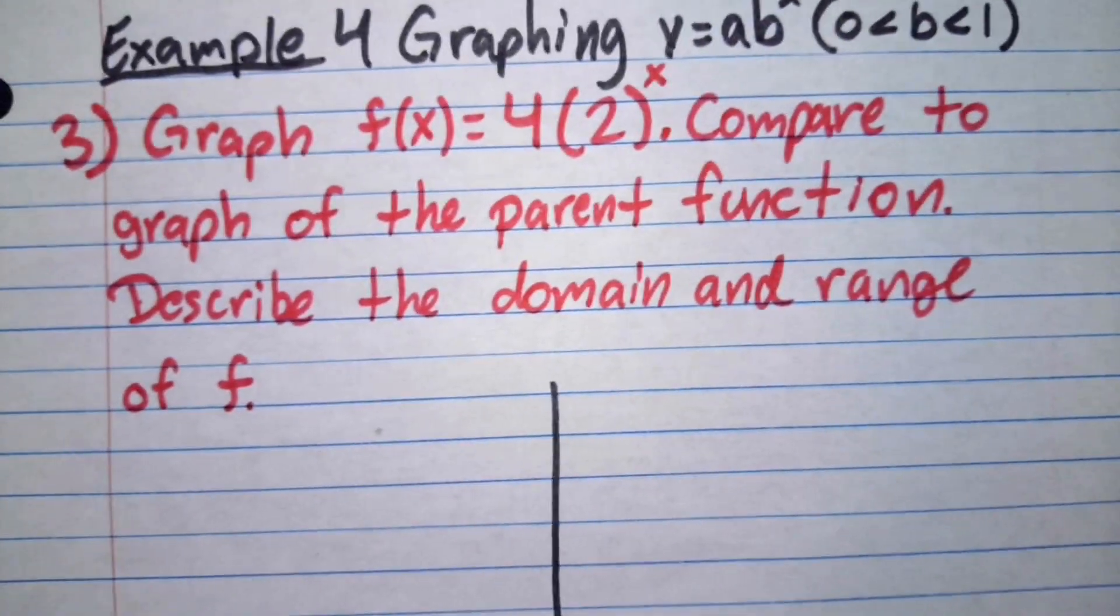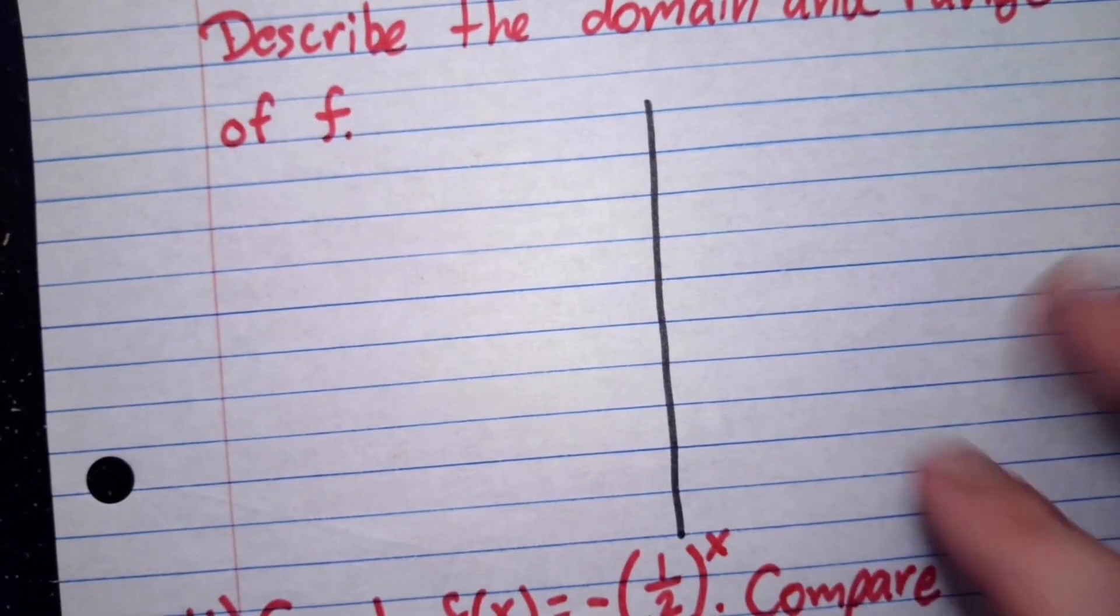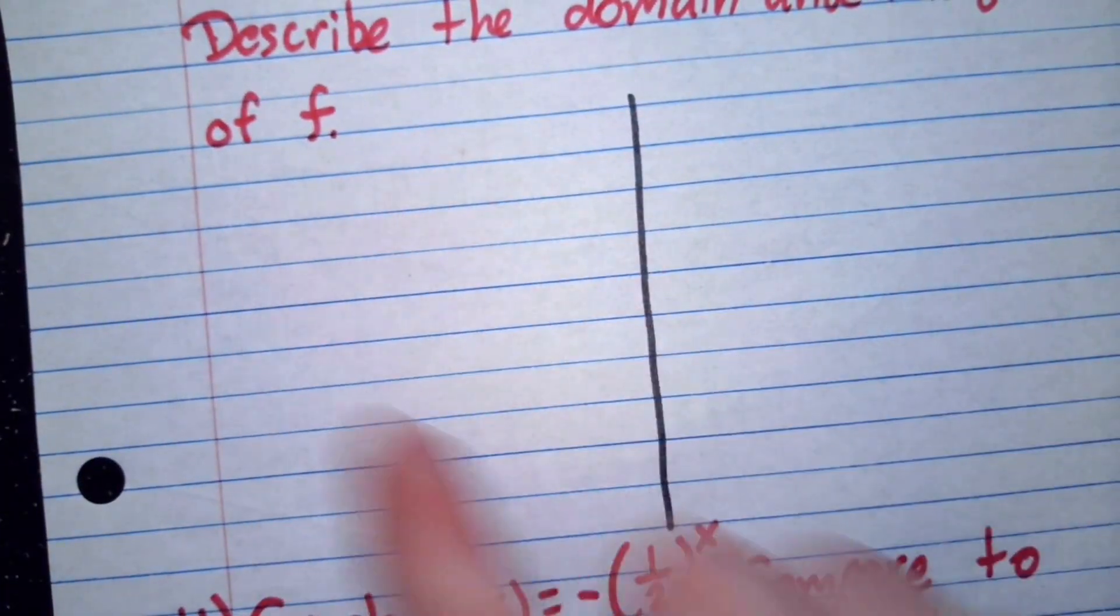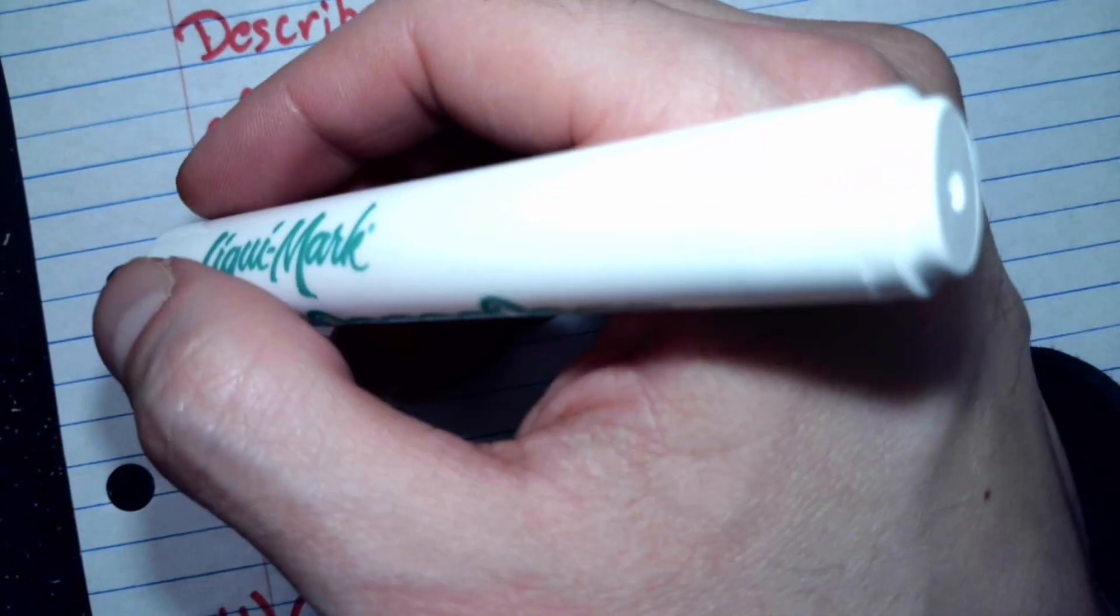So let's see what 3 says. It says graph f of x is equal to 4 times 2 to the x power. Compare to the graph of the parent function. Describe the domain and the range of f. So let's see. First I'm going to make a table of f in this part of my paper.